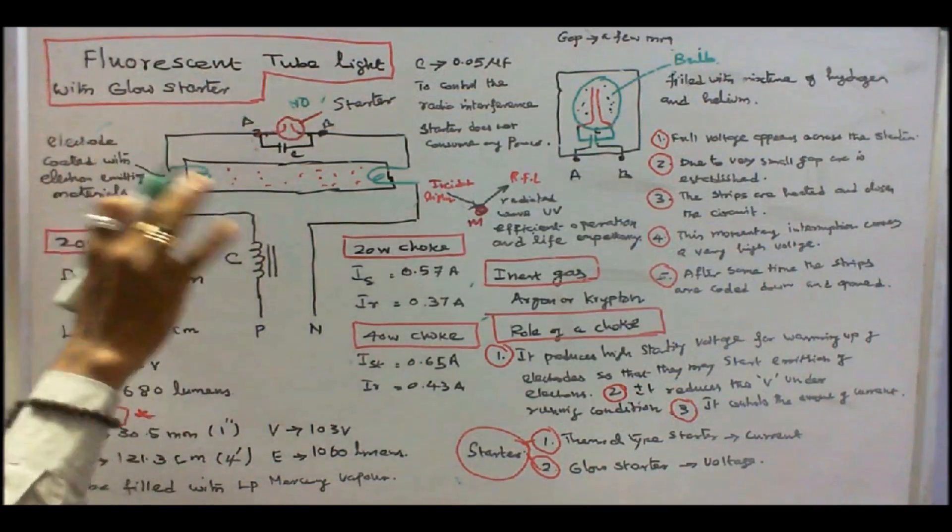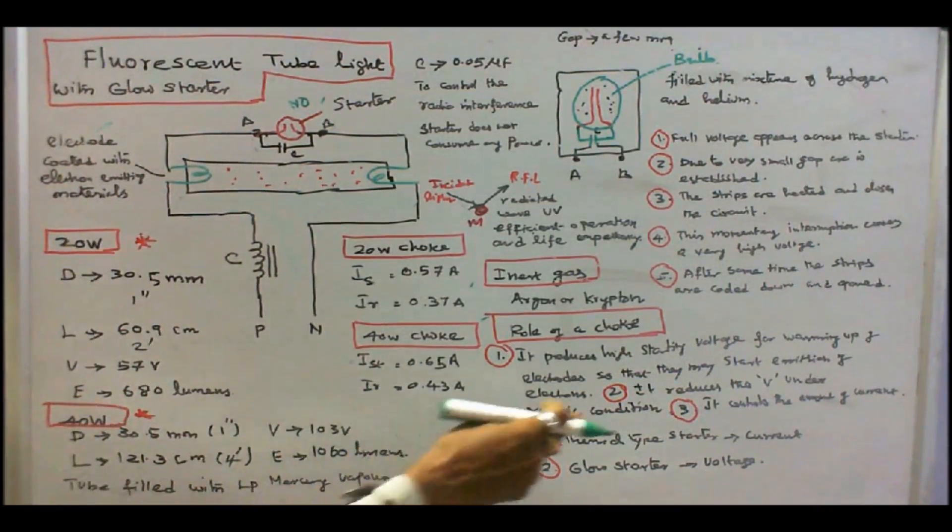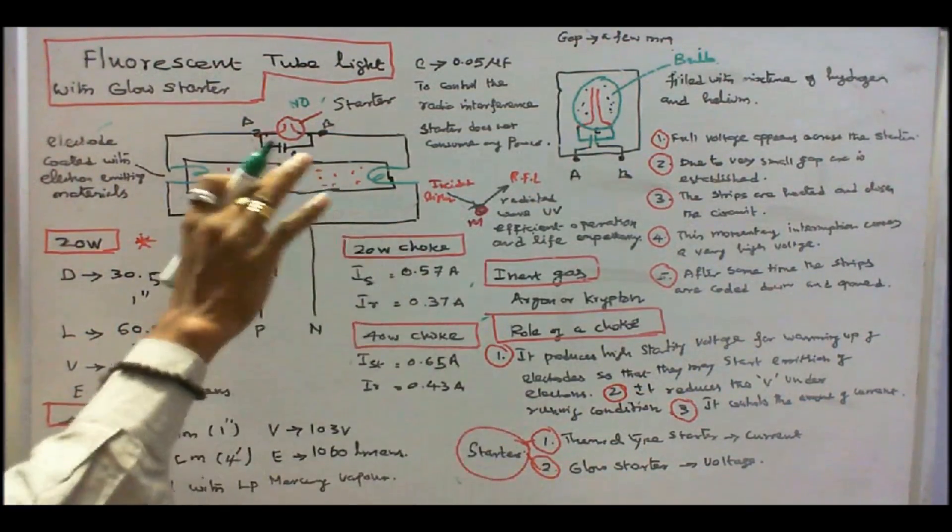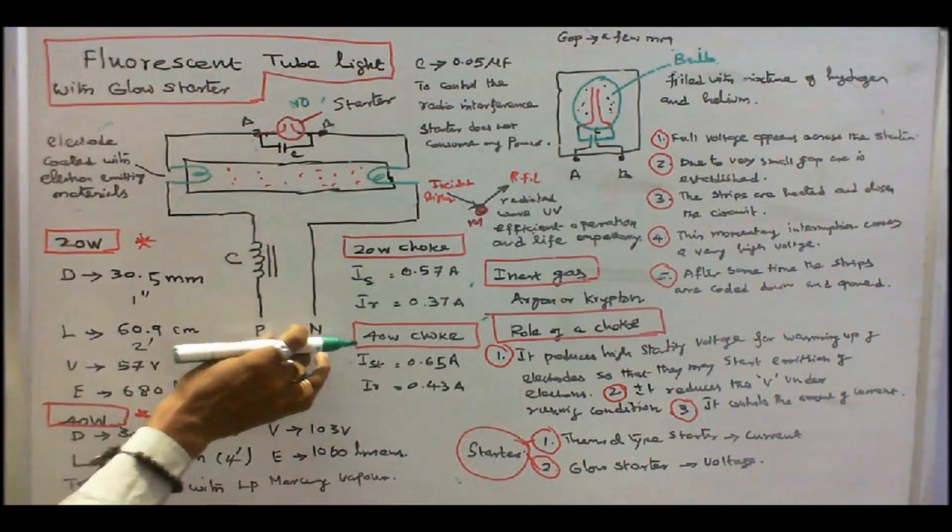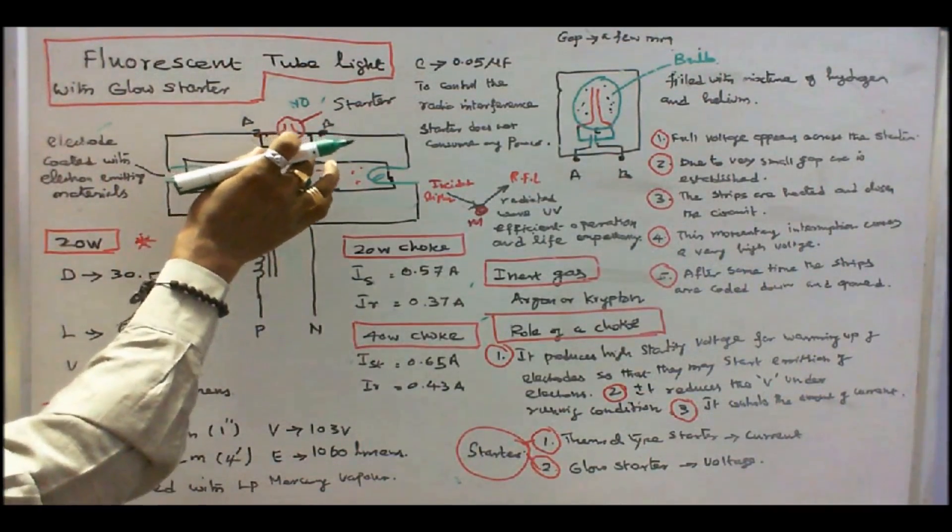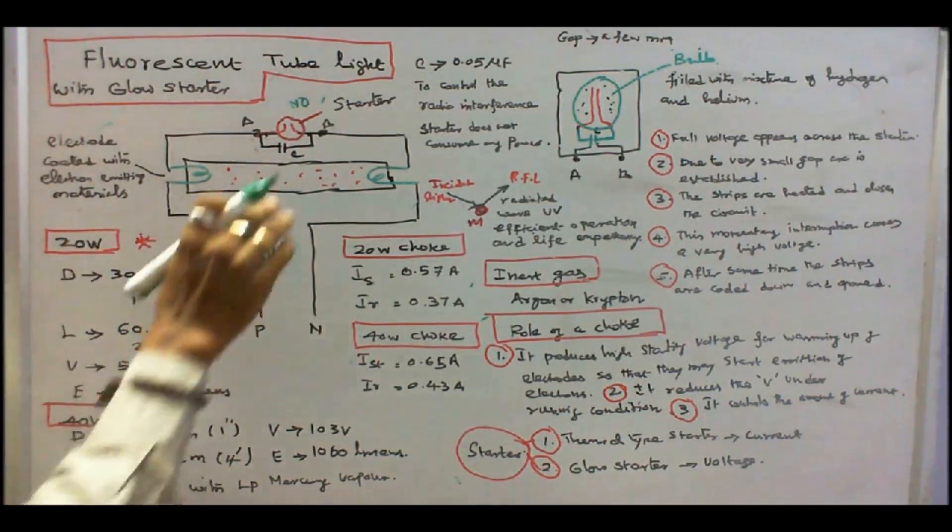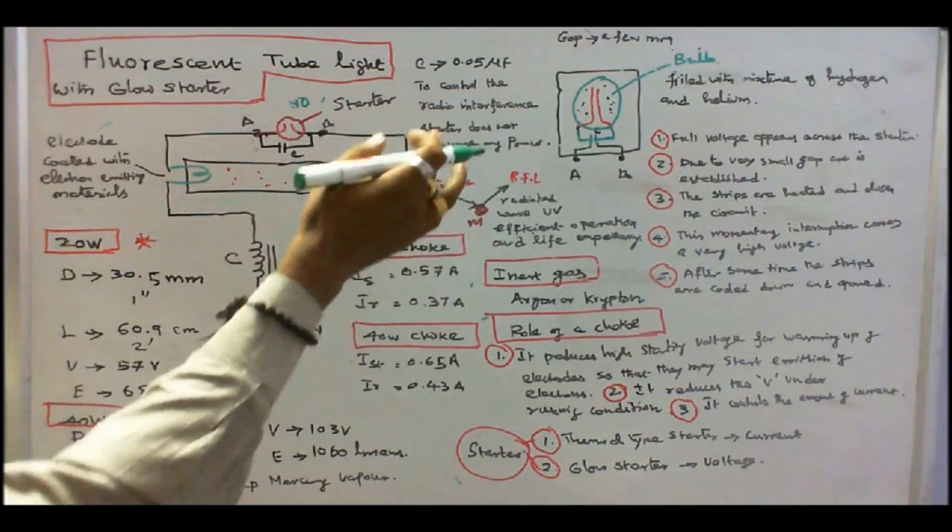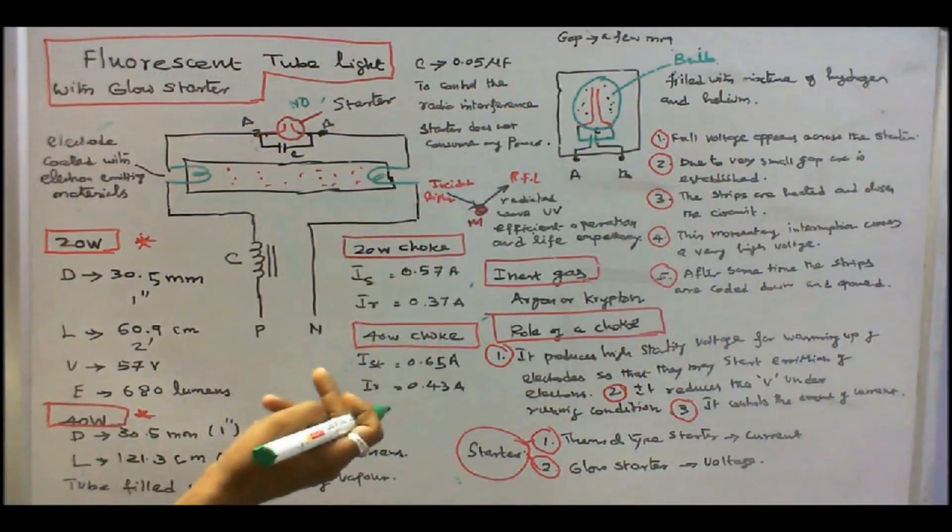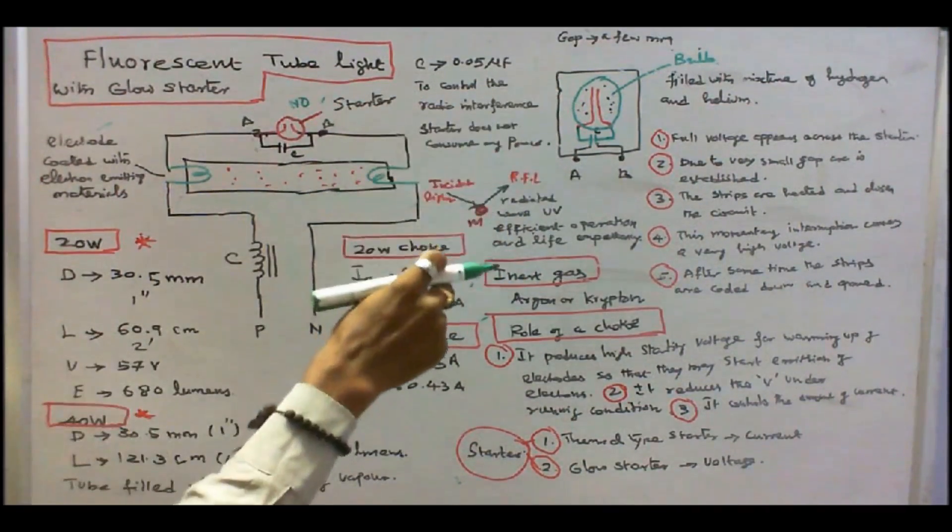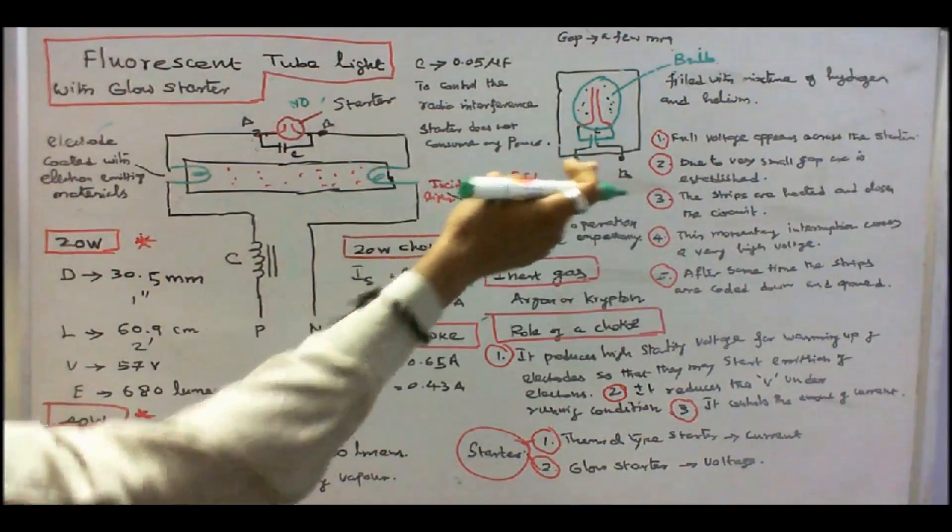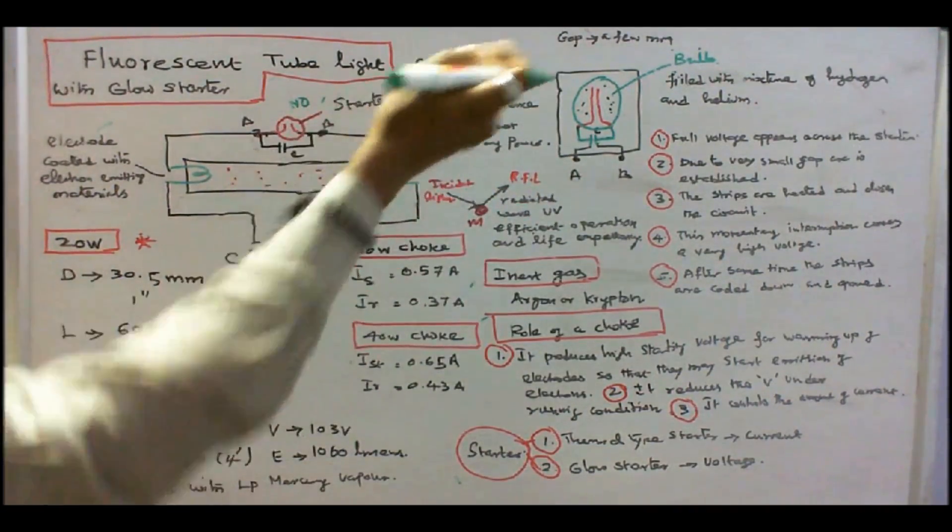The third is a starter. There are two types of starter. One is a thermal type starter. That is a current operating device. Number two, glow starter. Glow starter is a voltage operating device. When you switch on the supply to 230 volts, but we need a higher voltage, 1000 volts. Therefore, full voltage appear across the starter. The starter is made up of bimetallic strips. Two different temperature-coefficient metals. The gap between the metals is a few mm, which is placed inside the bulb, filled in with the mixture of hydrogen and helium. So, due to very small gap, arc is established. You can see the arc. That's why it is called as a glow starter.